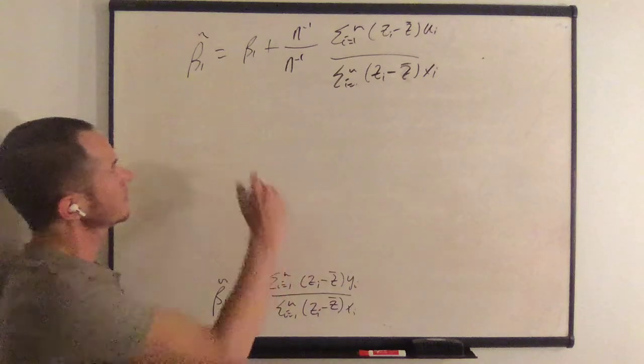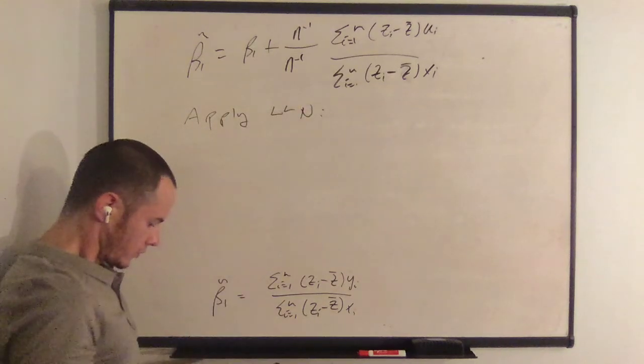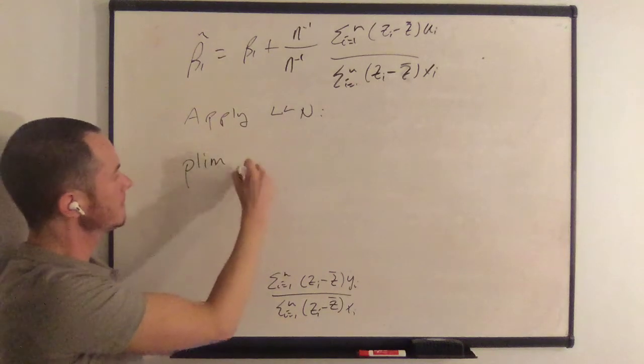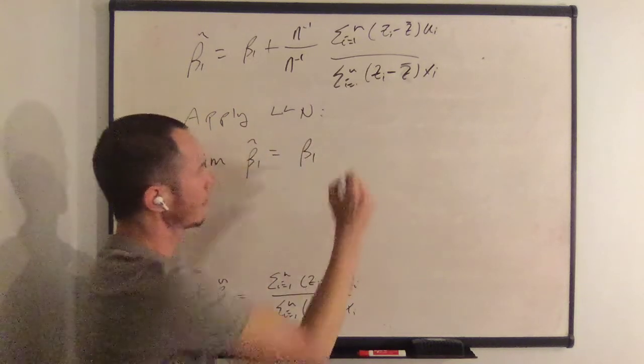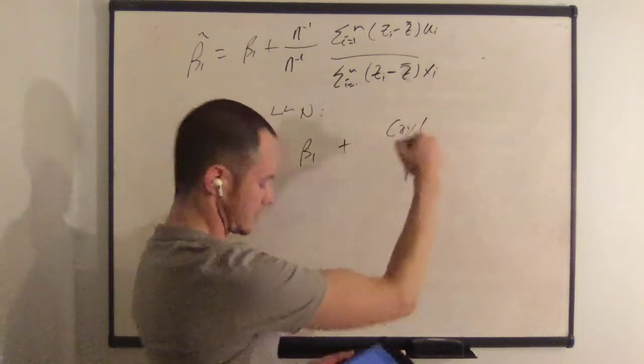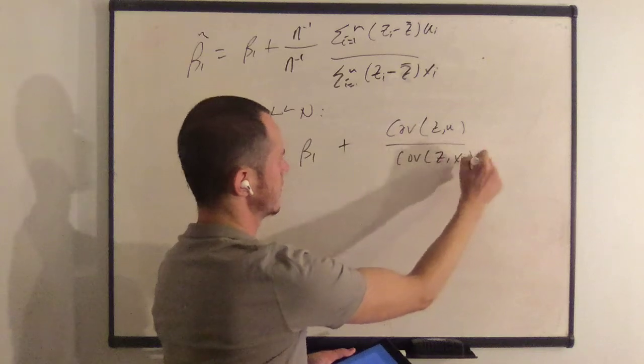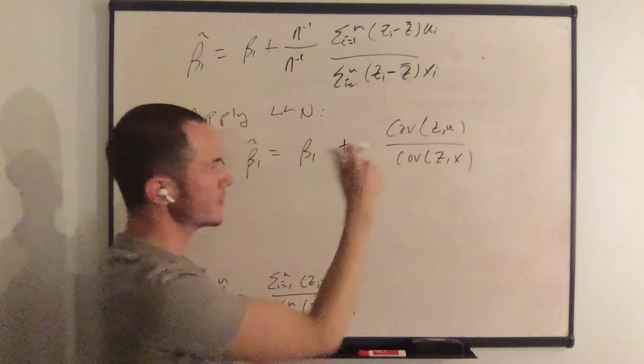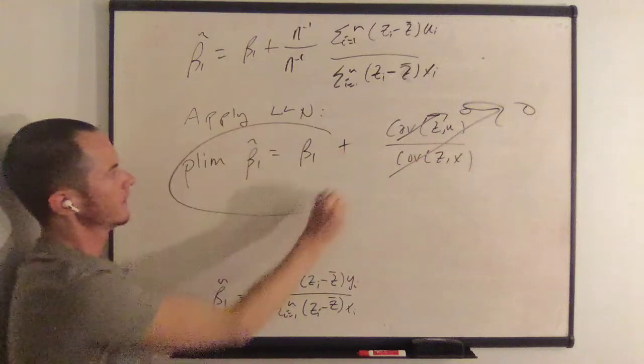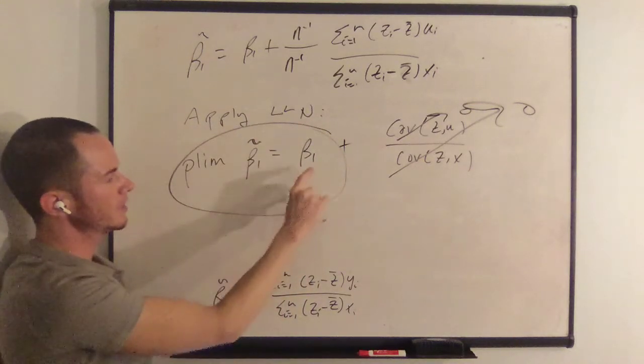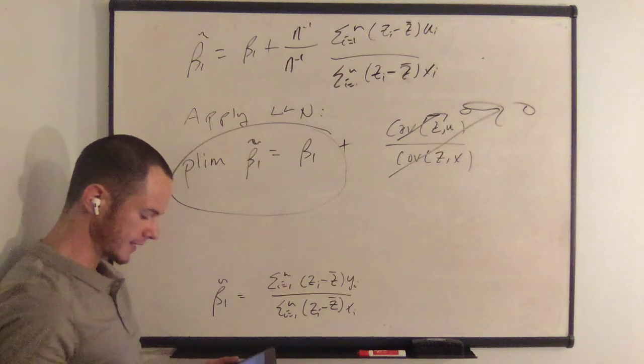So we can next apply the law of large numbers so that we can write the plim beta 1 tilde is equal to beta 1 plus the covariance between z and u over covariance z x. And because the covariance between z and u is equal to 0, that is 0. This whole term is 0 and the plim beta 1 tilde is equal to beta 1. So what we've shown is that this is a consistent estimator.